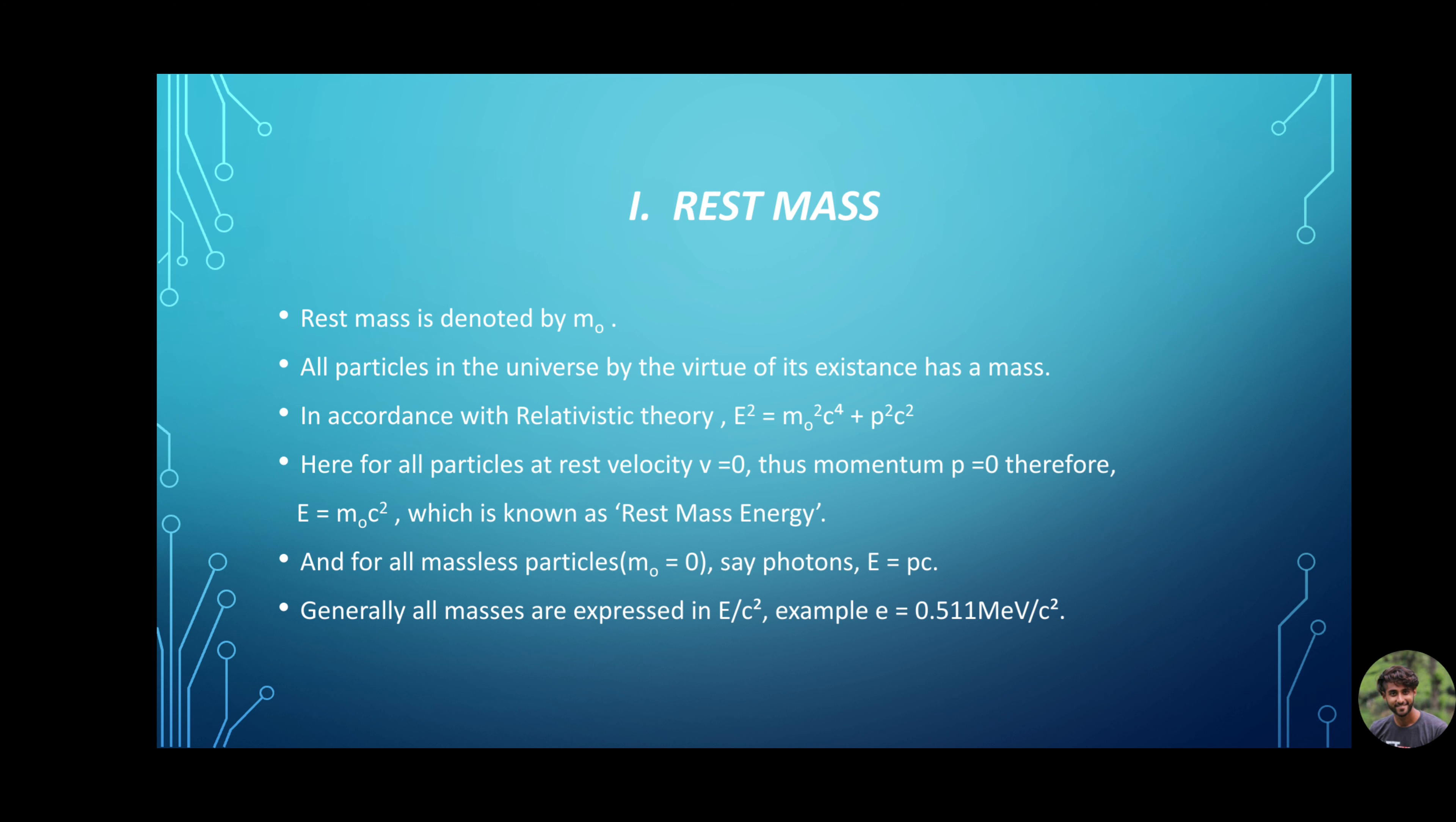Consider photon or neutrino, for which m₀ = 0. Here, energy is expressed as E = pc. But generally, mass is always expressed in terms of energy by c². For example, energy of electron E = 0.511 MeV/c².